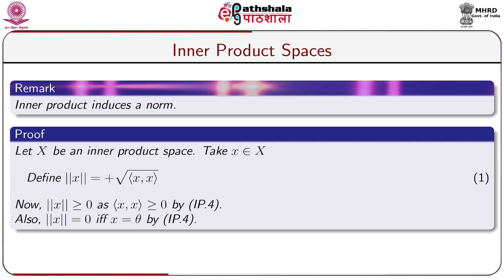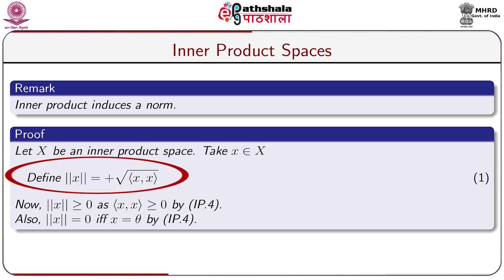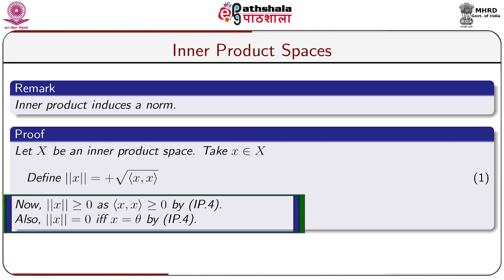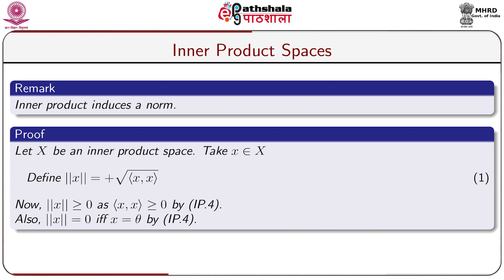Now, inner product induces a norm. Let X be an inner product space and take x belonging to X. Define the norm of x equal to the positive square root of ⟨x, x⟩. Now, norm of x is greater than or equal to 0, since ⟨x, x⟩ ≥ 0 by axiom IP4. Also, norm of x equals 0 if and only if x equals the zero vector theta, by inner product axiom 4.